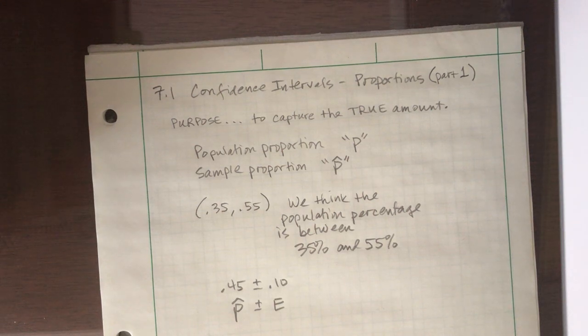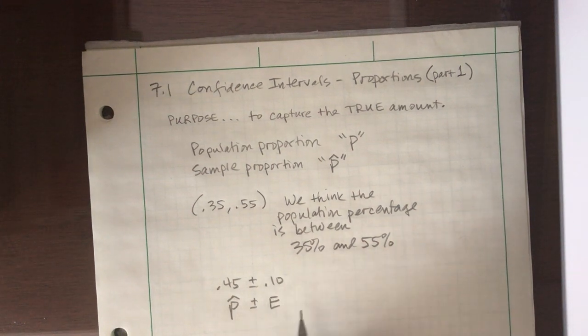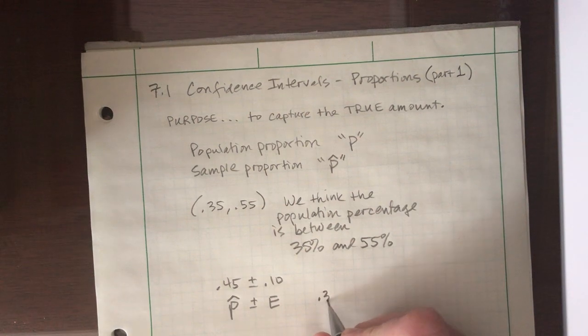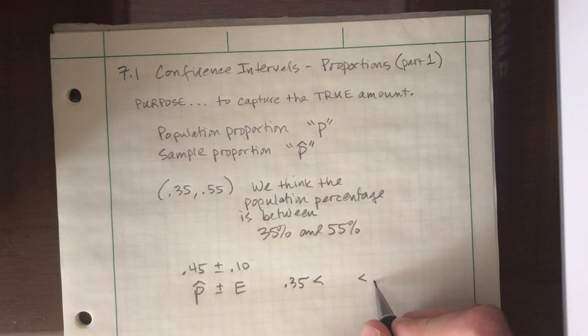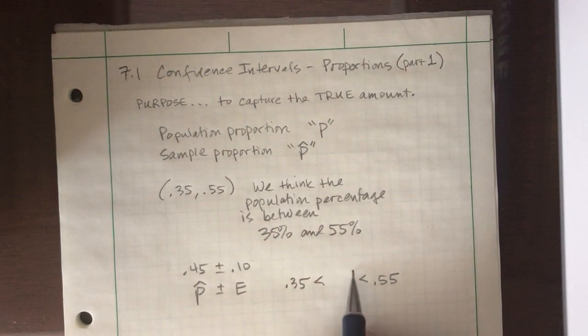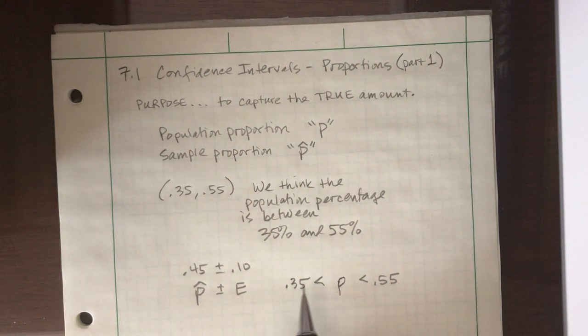Okay, so one thing you may see in your homework is with this last example. We may say something like, what is between 35 and 55%? If we had an empty spot that says something is sandwiched in between 35 and 55%, what is that? It's kind of a trick question. You might think it's a number. You might even think, oh, is it 45, the number in the middle? Nope. It's just the symbol p. The population proportion is what we think is between 35 and 55%.